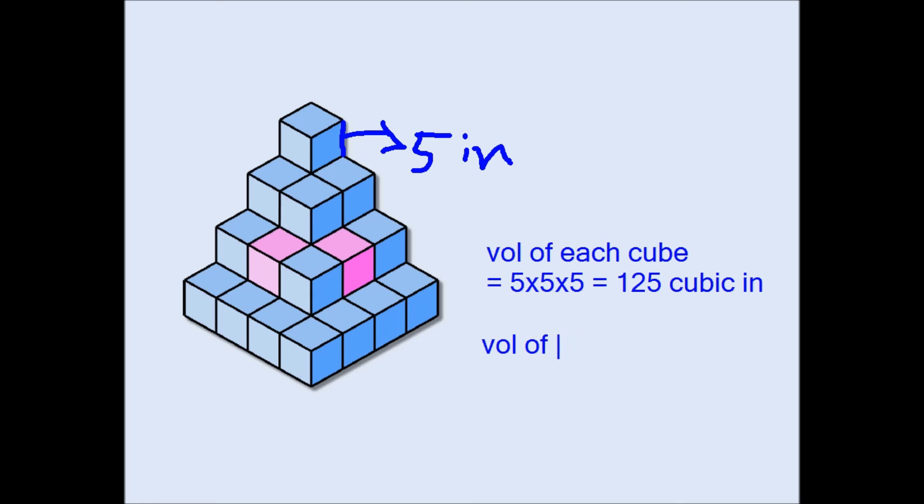The volume of the original solid is equal to, there are 30 cubes and each cube has a volume of 125 cubic inches. So this has to be, we're going to find out what it is, and 125 times 30 is 3750 cubic inches. That's my answer, 3750 cubic inches.